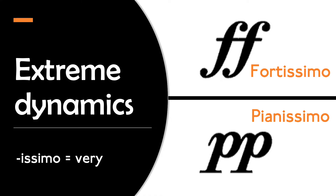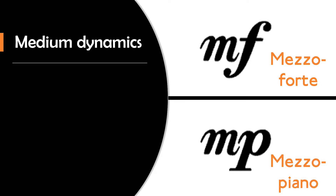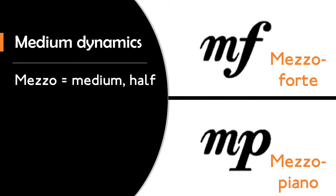If the dynamics are in between forte and piano, we have an M before the F or P markings. So MF stands for mezzo forte and MP stands for mezzo piano, meaning medium loud and medium soft. Mezzo literally means medium in Italian, or half, so again it links very logically to the basic terms of forte and piano.